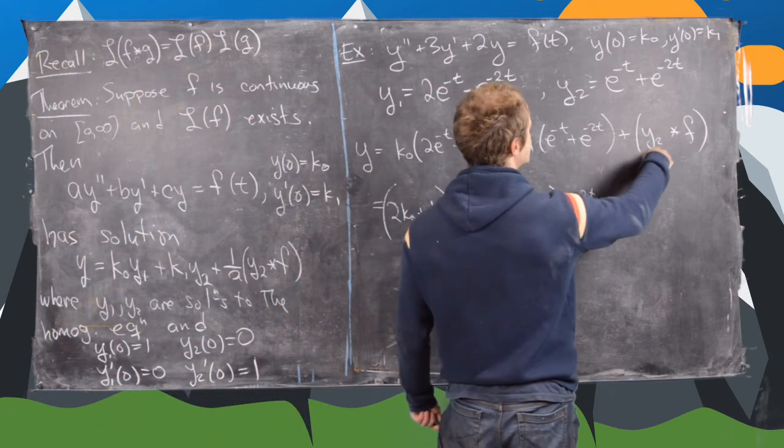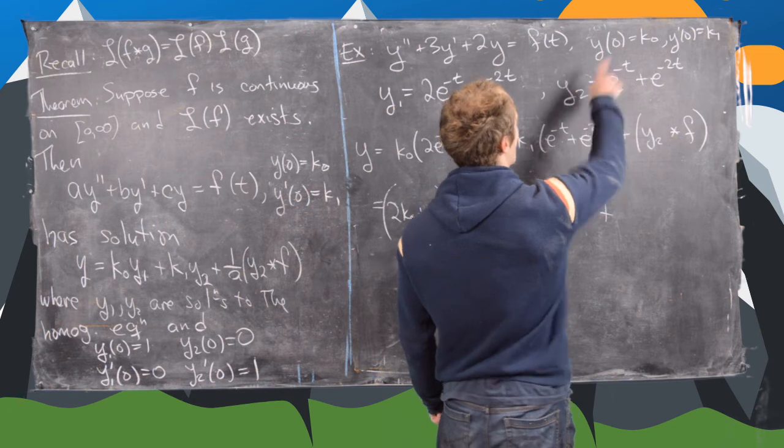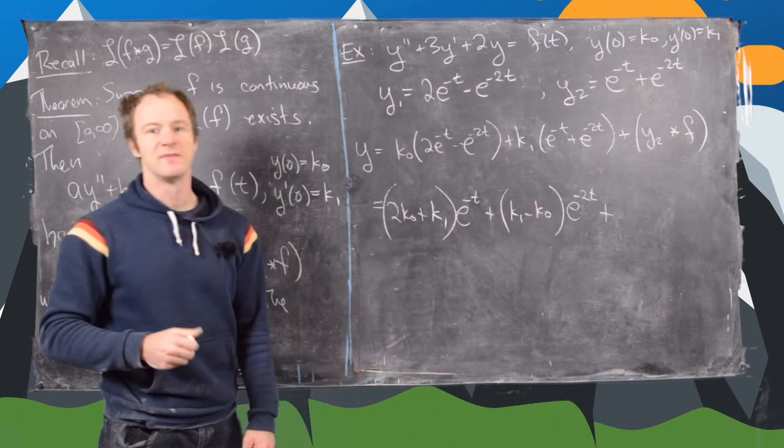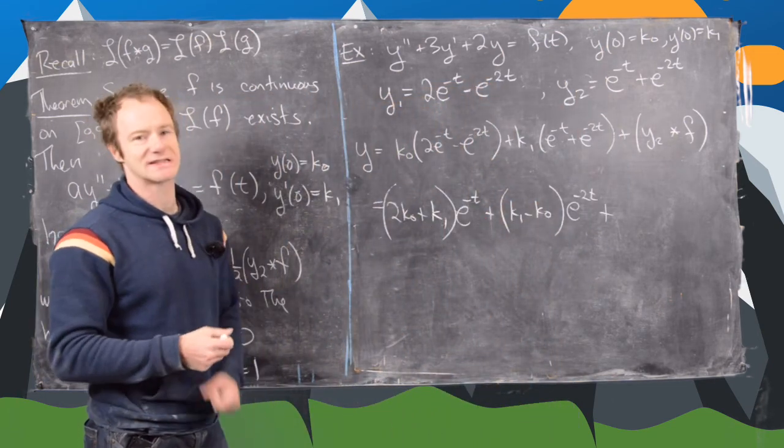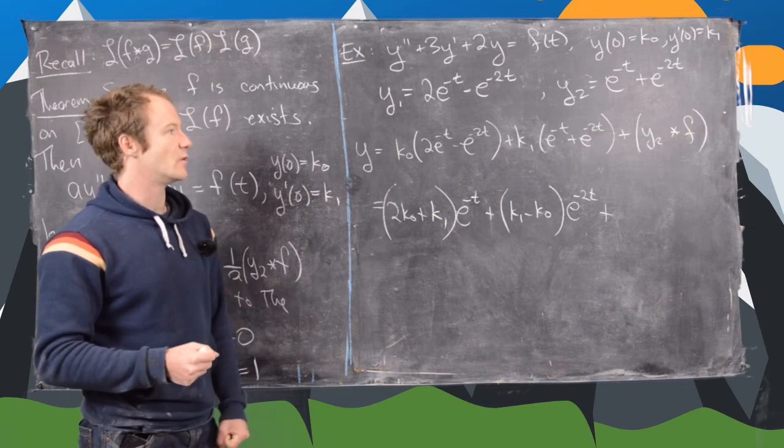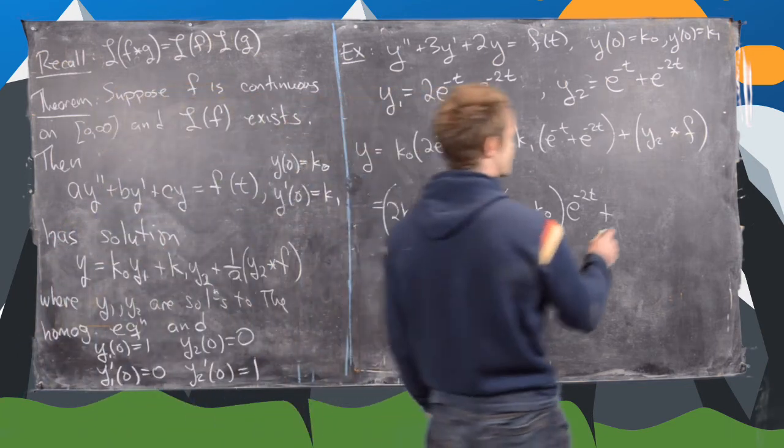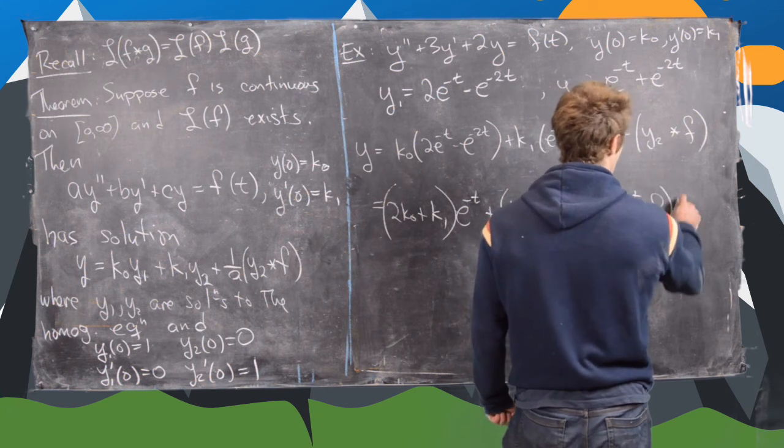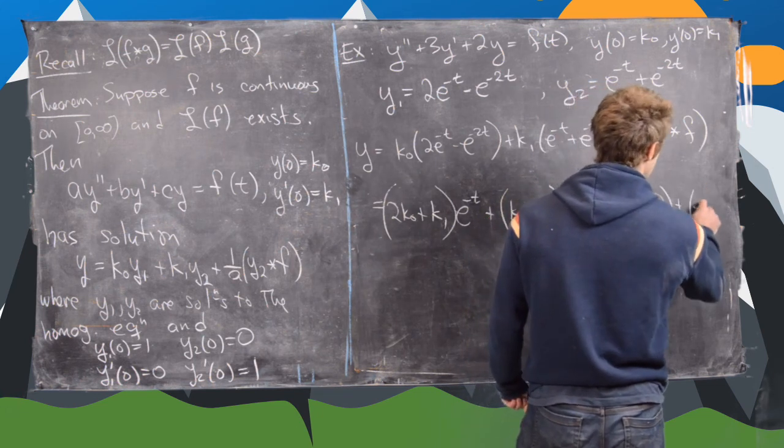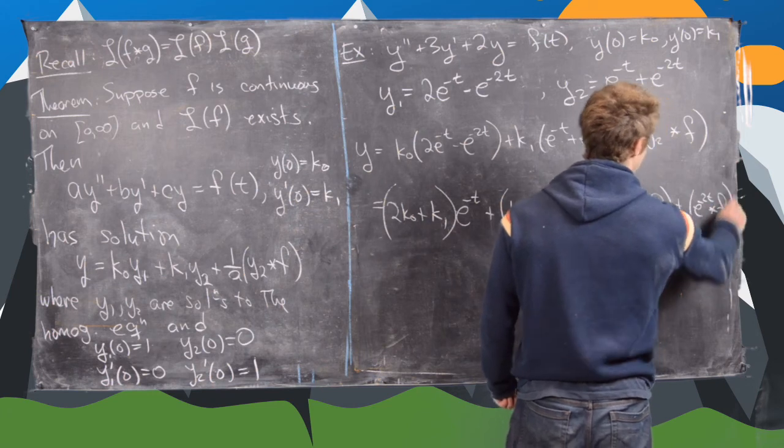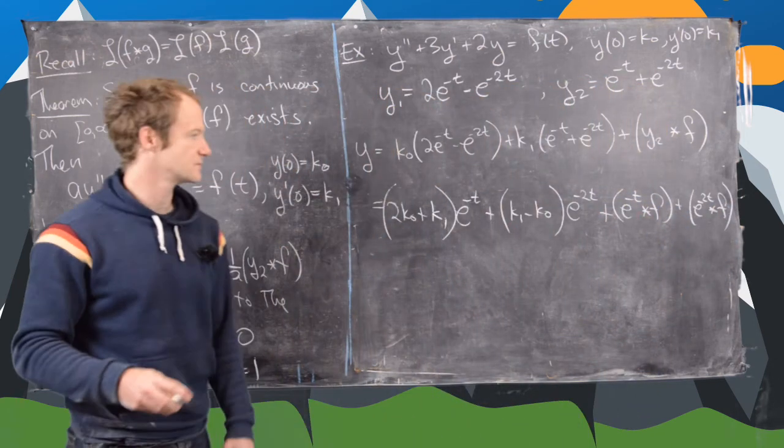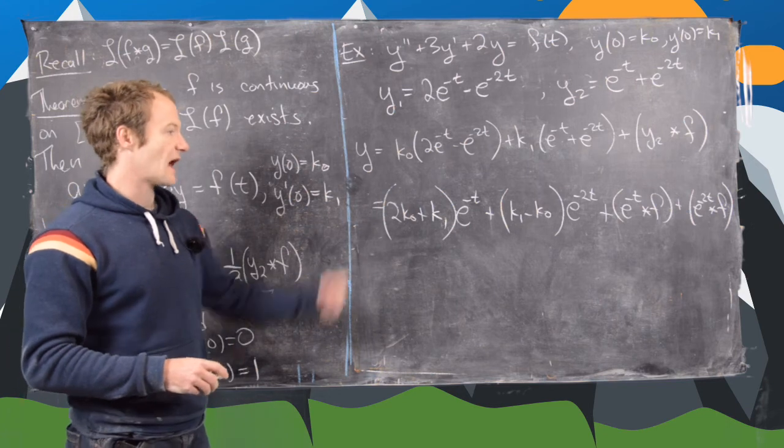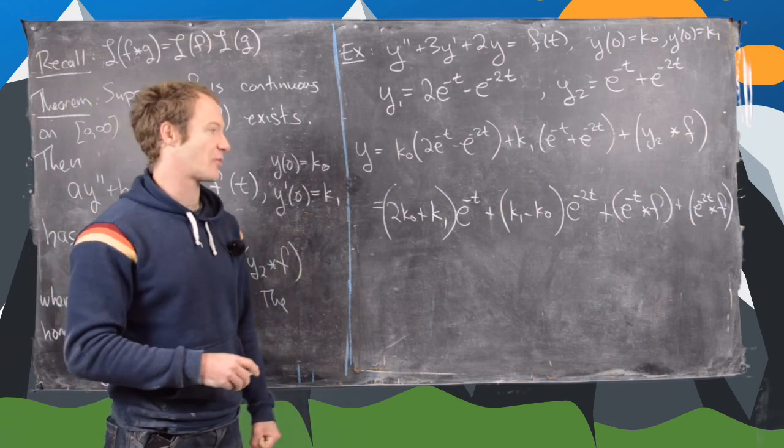And then what we'll do is plug this value of y2 into this convolution. And then recall that the convolution is linear, so it splits up with addition. And now notice that's going to give us e to the minus t convolution f plus e to the minus 2t convolution f. Okay. Great. And then I think this is a nice way to end the problem.